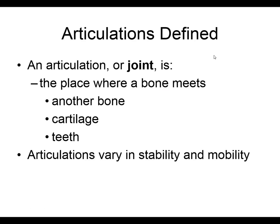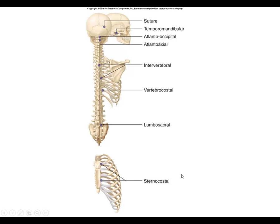An articulation is defined as whether a bone is separated from another bone by something, or separated from a cartilage, or separated from a tooth — that's a special type. The joint between the maxilla or mandible and the teeth is called gomphosis. The articulations vary in stability and mobility, and there is an inverse correlation between the two: the less mobile a joint is, the more stable it is.